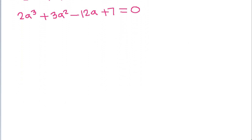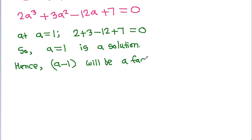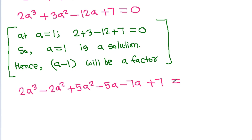Now, at a equals 1: 2 plus 3 minus 12 minus 7 — wait, it gives 2 minus 3 minus 2 minus 7, that is 0. So a equals 1 is a solution, and hence a minus 1 will be a factor. So we write 2a cubed minus 3a squared minus 12a minus 7 with the factor a minus 1 extracted.